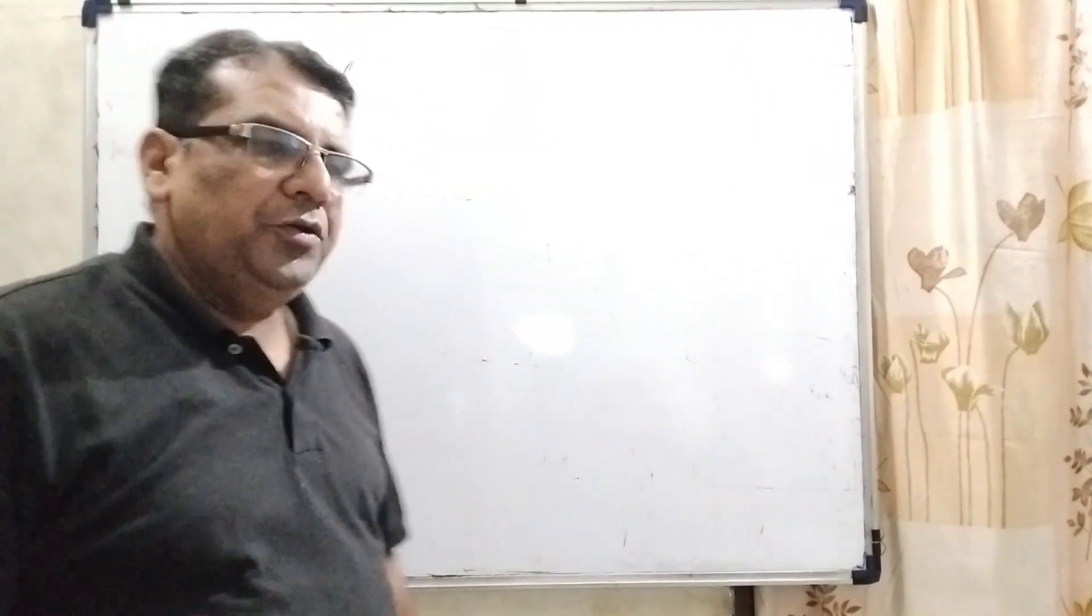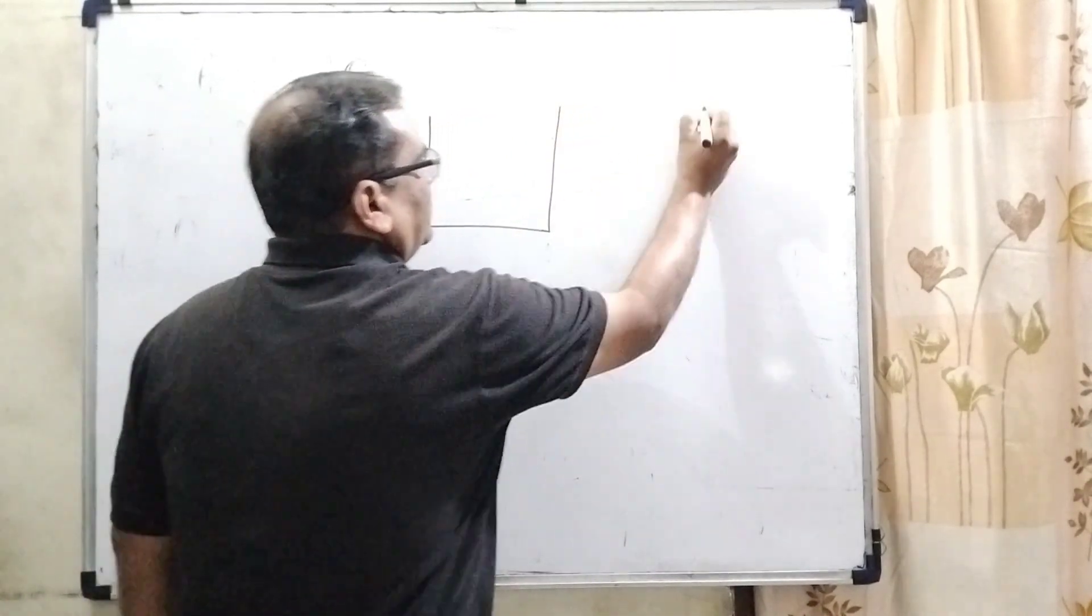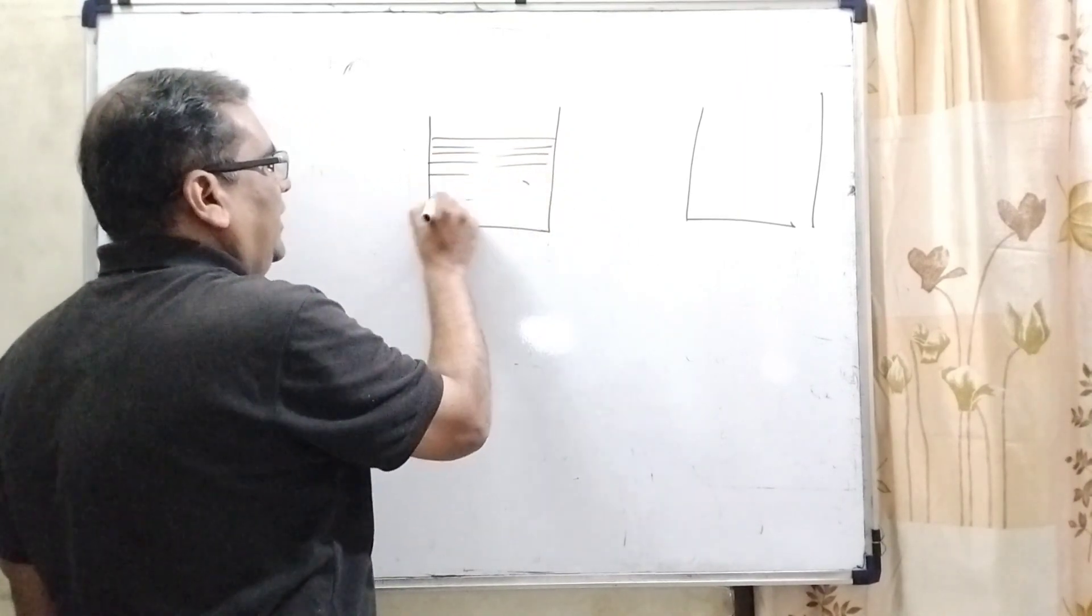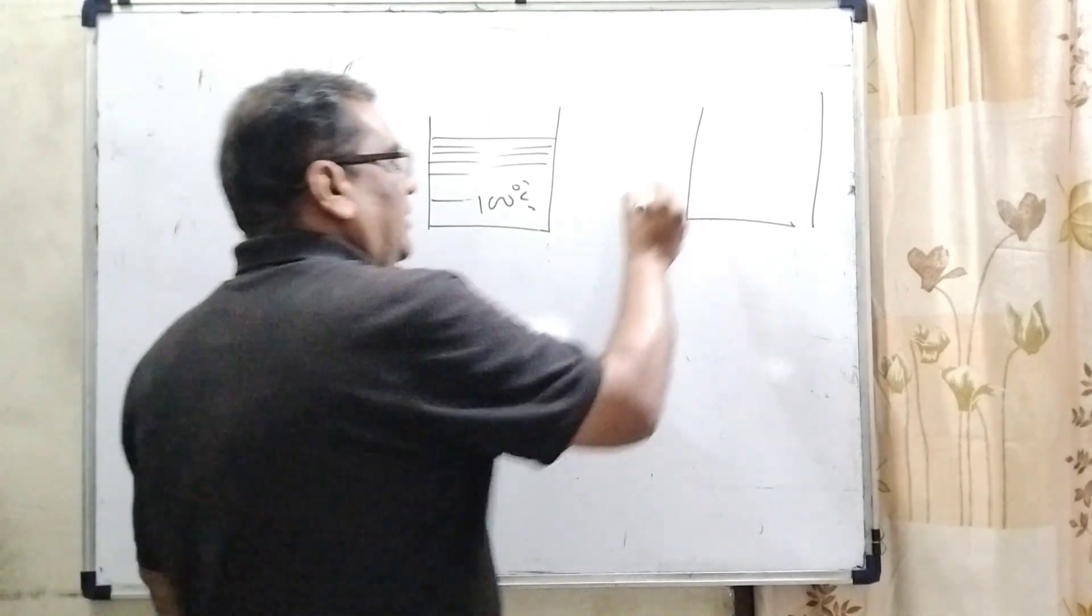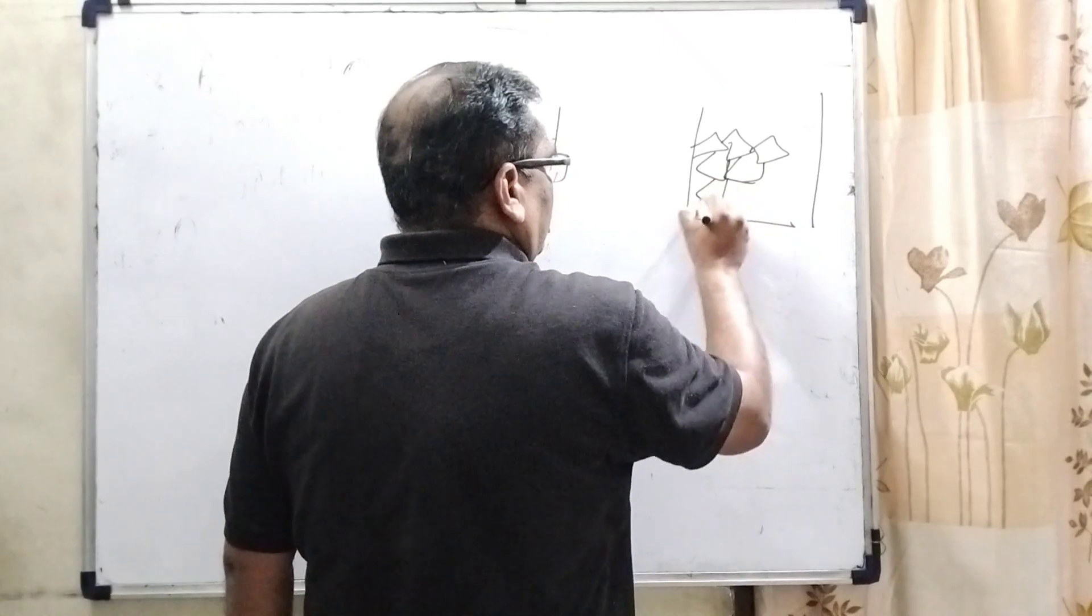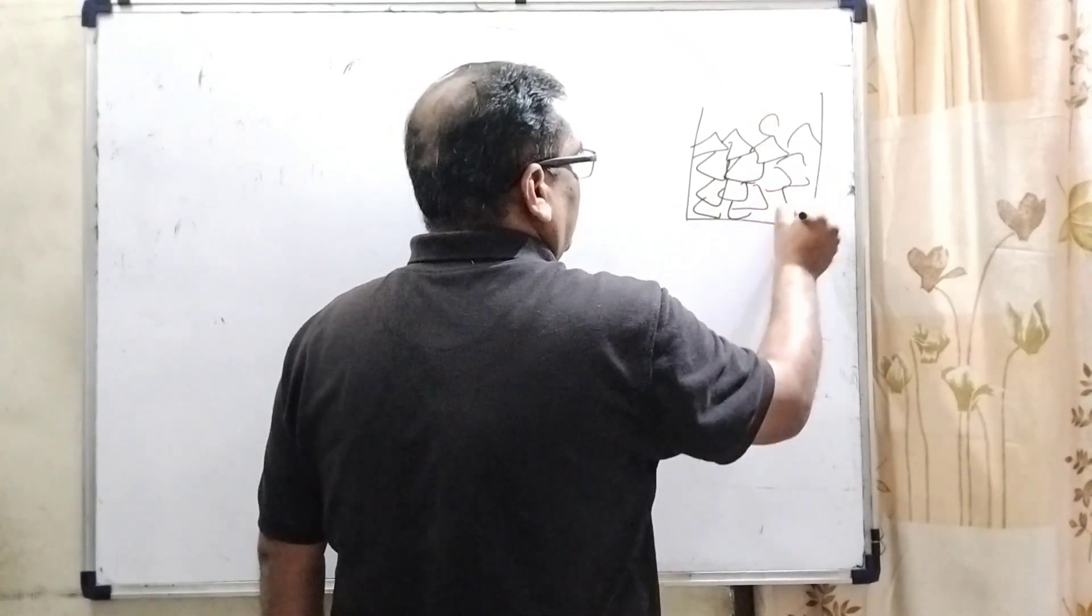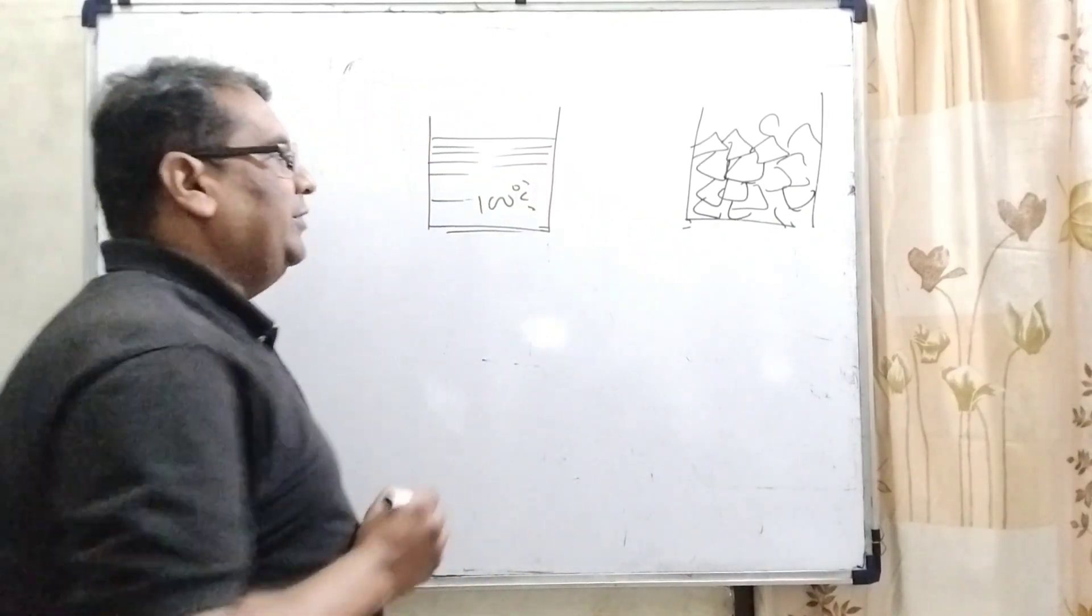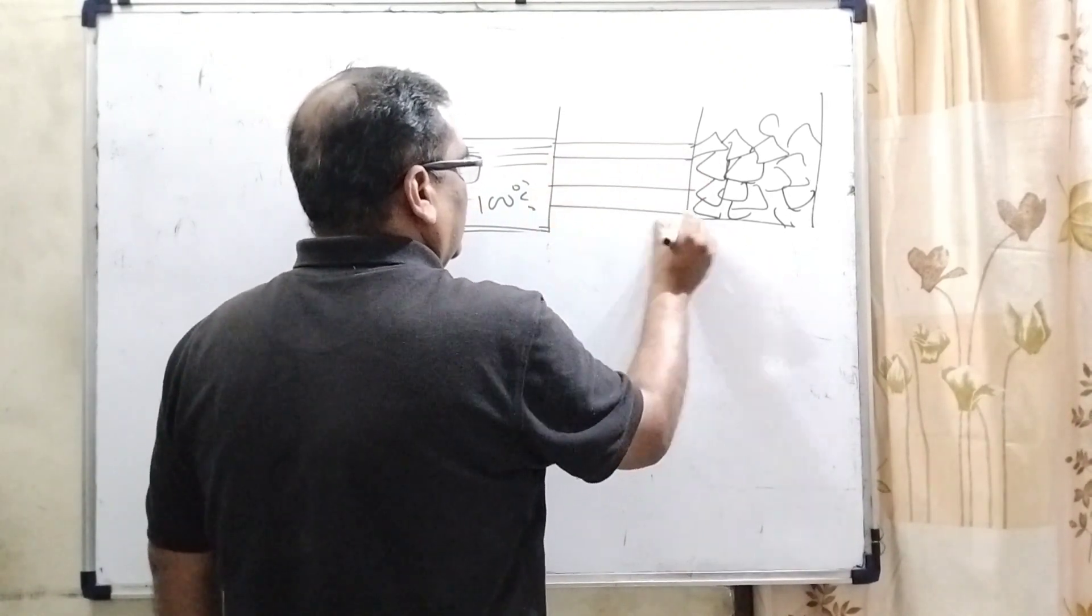Now, according to this question, we have given two containers. One container filled with water at 100 degree Celsius, right, and second container filled with ice. Okay. And here, these two vessels are connected with rods in such a way that is parallel.